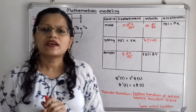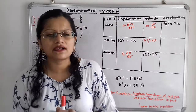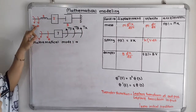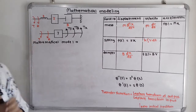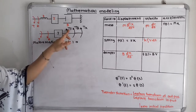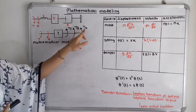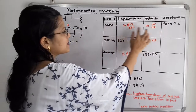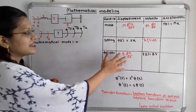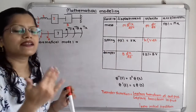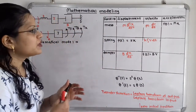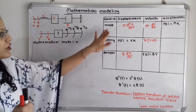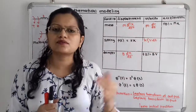Now we have to take the mathematical model for this system. Because of the applied torque T, there is angular displacement theta. We have to write the torque due to mass, due to damper, and due to spring in terms of displacement. If we observe this table, here are the formulas for the mechanical translational system, and we have to convert these formulas into the mechanical rotational system. For the torque due to mass, in the rotational system we use mass moment of inertia J instead of M, and angular acceleration alpha instead of linear acceleration. So the applied torque T equals J times alpha.